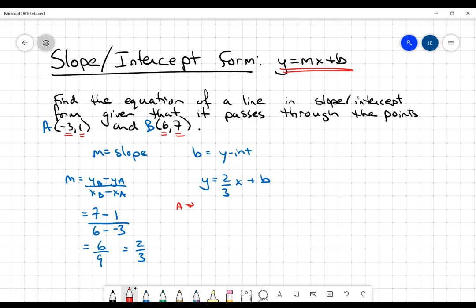I'm just going to use point a here. The y coordinate in point a is 1. The x coordinate in point a is negative 3. And that's plus b there.